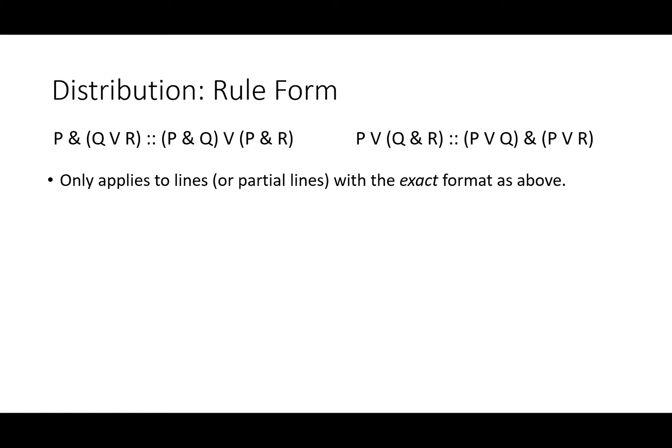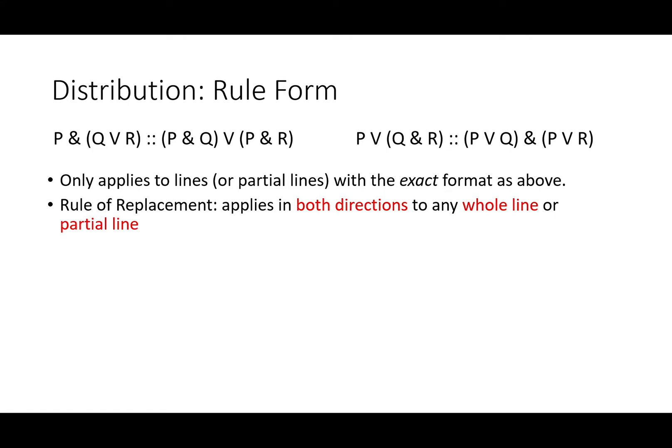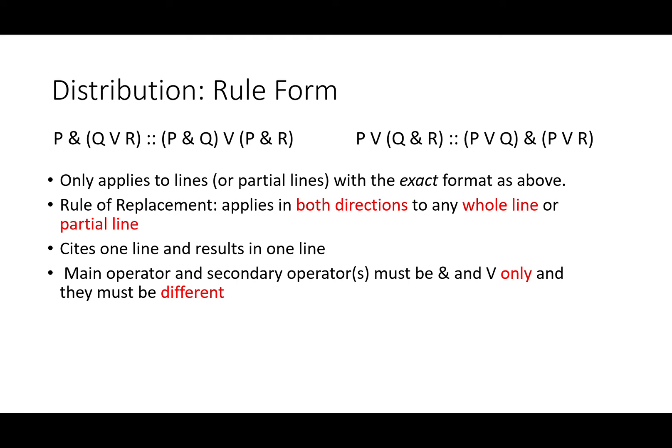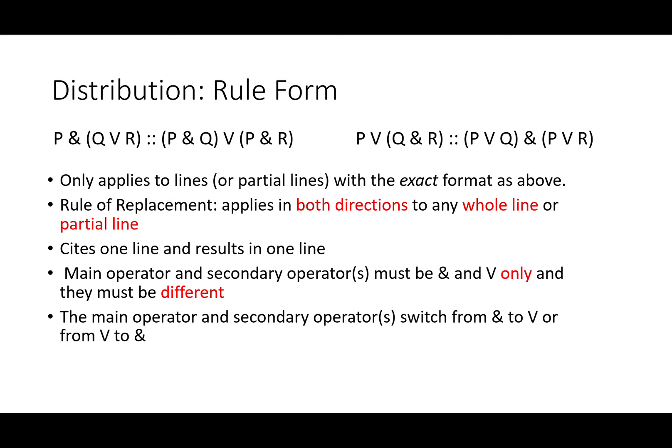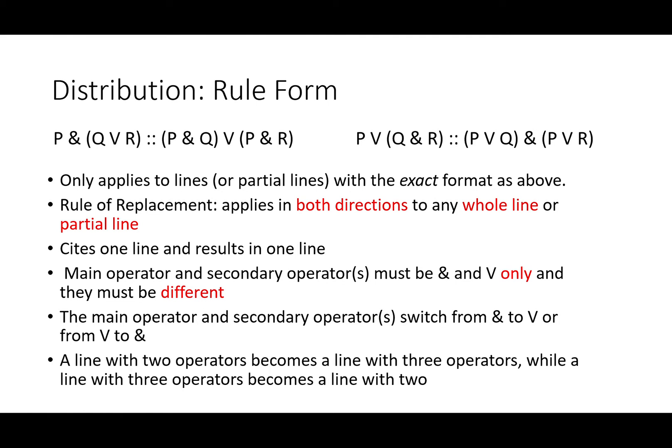We aren't going to do more complicated inputs — it's just too much. This rule only applies to lines or partial lines with the exact format as above. This rule of replacement applies in both directions to any whole line or partial line. It cites one line and results in one line. The main operator and secondary operators must be AND and OR only, and they must be different. It doesn't work with P AND Q AND R or P OR Q OR R — that's what associativity is for. The main operator and secondary operators switch from AND to OR or from OR to AND. A line with two operators becomes a line with three operators, while a three-operator line becomes a line with two.